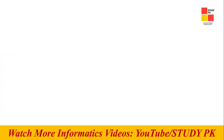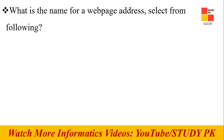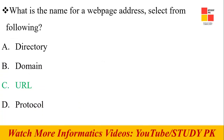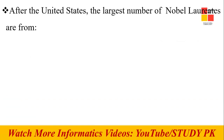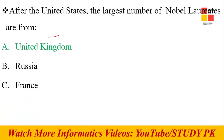Next question: What is the name for a web page address? URL — Uniform Resource Locator — is the right option. Next question: After the United States, the largest number of Nobel Prize recipients are from which country? UK is the right option. After the US, the second largest is the UK.